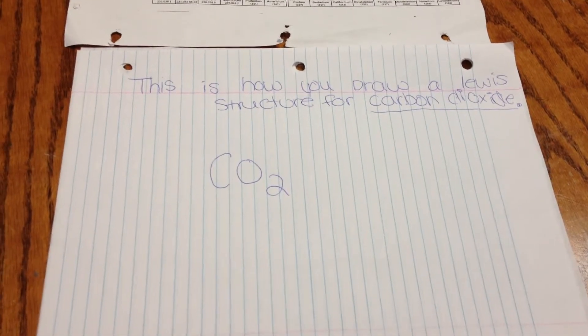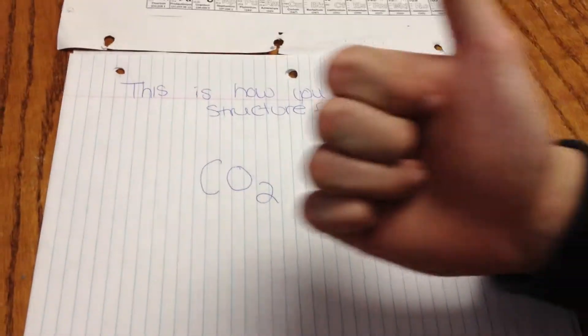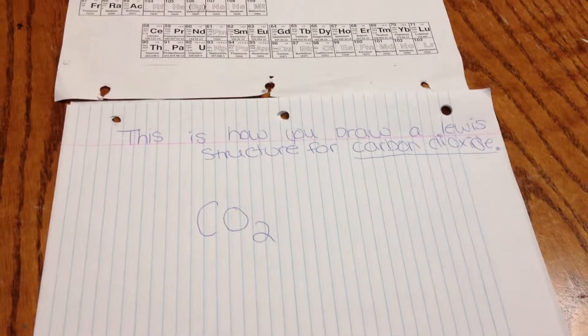This is how you draw a Lewis structure for carbon dioxide. First off, you have to start out with valence electrons.